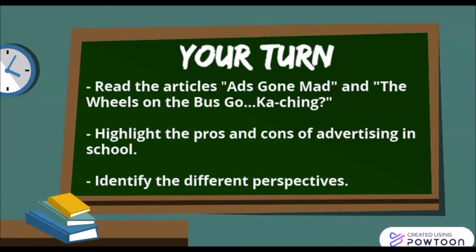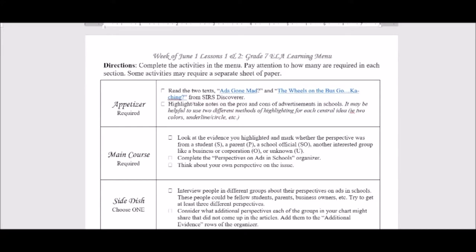Let's take a look at those assignments to clarify the directions. You'll notice that you've been asked to highlight or take notes on the pros and cons of advertisements in school. It might be helpful to use two different methods of highlighting for each central idea — for example, two different colors, or you could underline for one and circle for the other. As you're reading, whenever you see something that might be a pro of advertising in schools, you could highlight that in yellow or underline it.